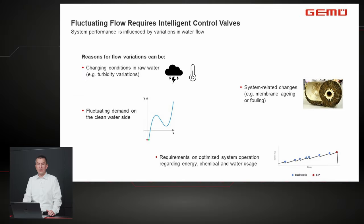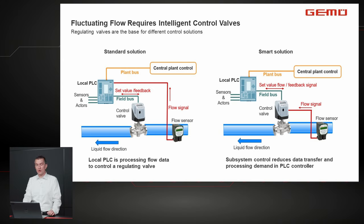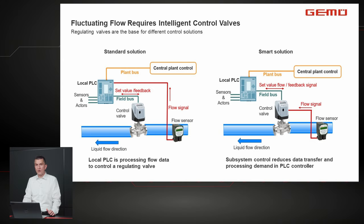The standard solution for flow adjustment is: a flow sensor sends a signal to the local PLC, which is connected to a central plant control system, which then instructs the control valve — via fieldbus or similar — to increase or decrease flow. A smarter solution sends the signal directly to the control valve, reducing data transfer. This is very useful for large plants, allowing a closed, independent control loop and reducing the data stream.